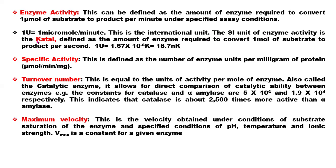This is the international unit of enzyme activity. The SI unit of enzyme activity is the katal. The katal is defined as the amount of enzyme required to convert one mole of substrate to product per second. One unit is equivalent to 1.67 × 10⁻⁸ katal. Specific activity is defined as the number of enzyme units per milligram of protein, with units of micromole per minute per milligram of protein.